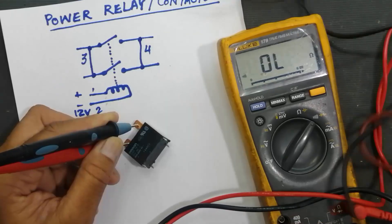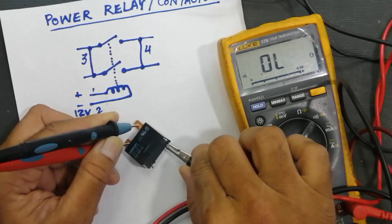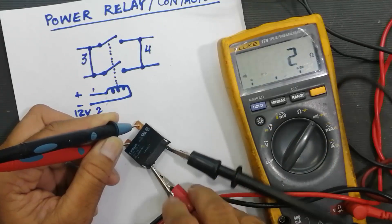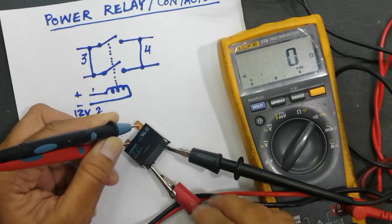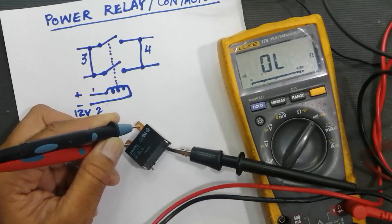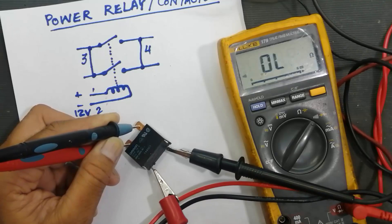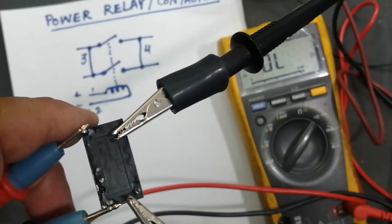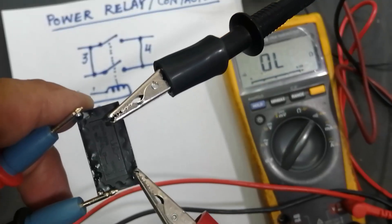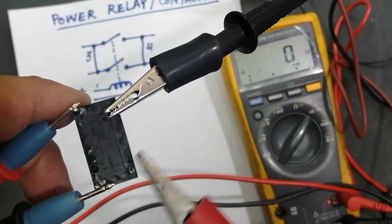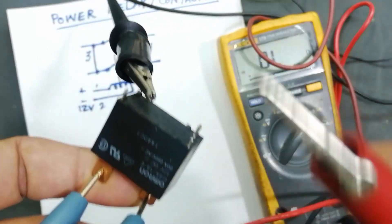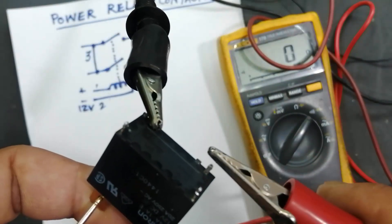I will take 12 volts power supply and we will connect at coil points. When I connected 12 volts the relay will make contact the same as these two points as well. I connected these two points here. And this coil.